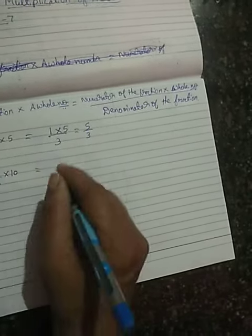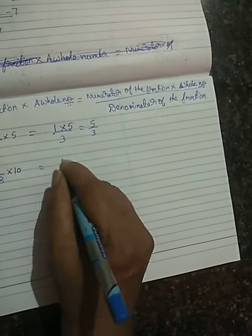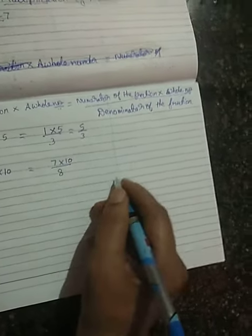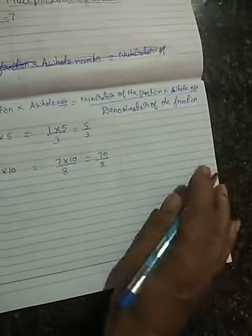Fraction × whole number equals numerator × whole number divided by denominator of the fraction. That is 7 × 10 = 70, by 8.